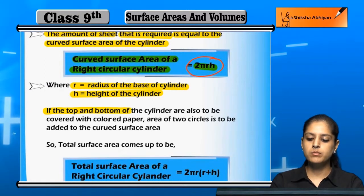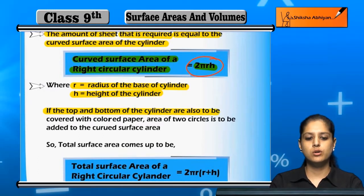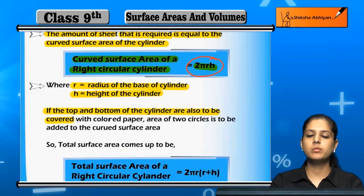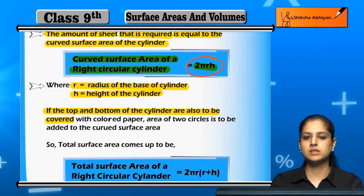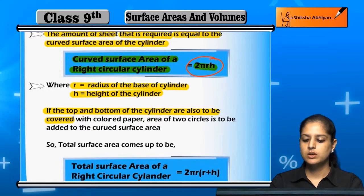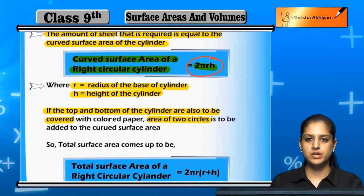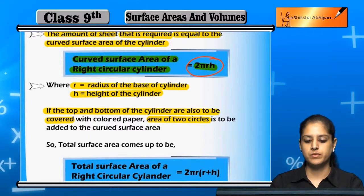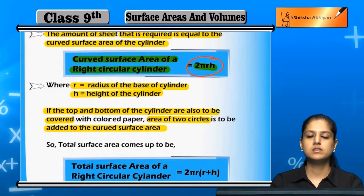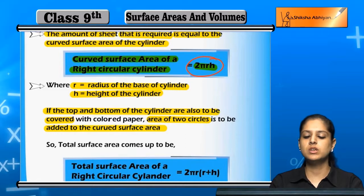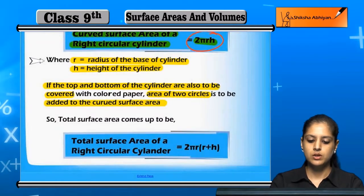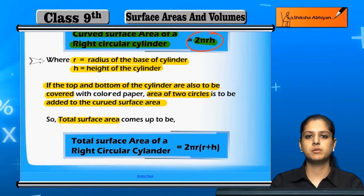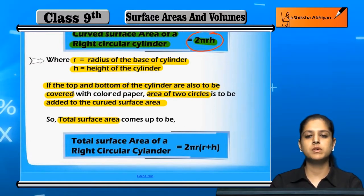If the top and bottom of the cylinder are also to be covered, we have to add the area of two circles to the curved surface area. So we have the total surface area — total means the curved portion plus the upper portion and the lower portion.